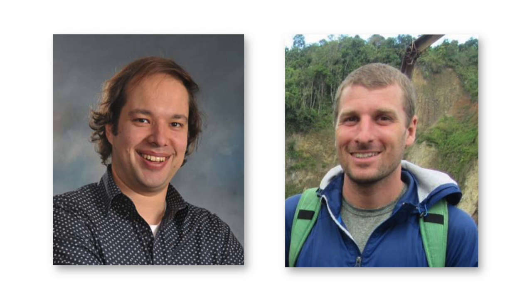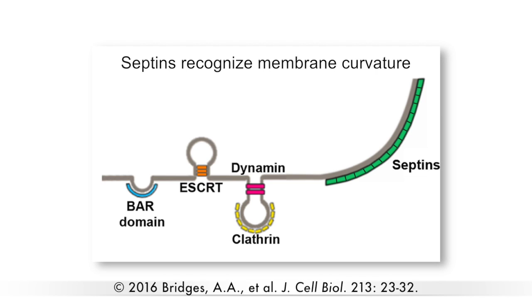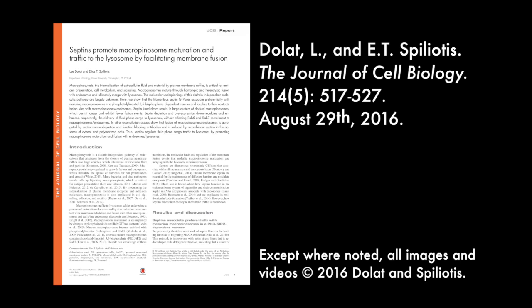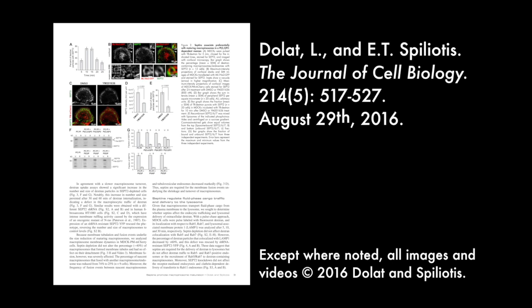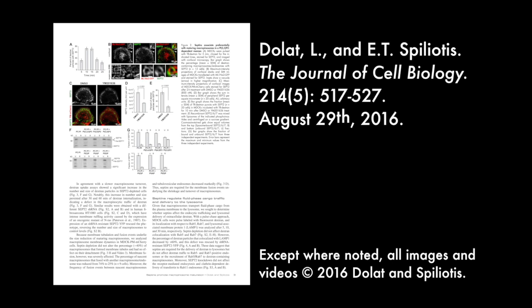The most straightforward explanation is that septins could act synergistically with SNARE proteins, which are known to mediate membrane fusion. But another exciting possibility is that septins promote fusion by inducing membrane curvature or remodeling—something that could be investigated in the future. More details about how septins promote macropinosome maturation and traffic to the lysosome by facilitating membrane fusion can be found in the paper by Dolat and Spiliotis, published in the August 29, 2016 issue of the Journal of Cell Biology.